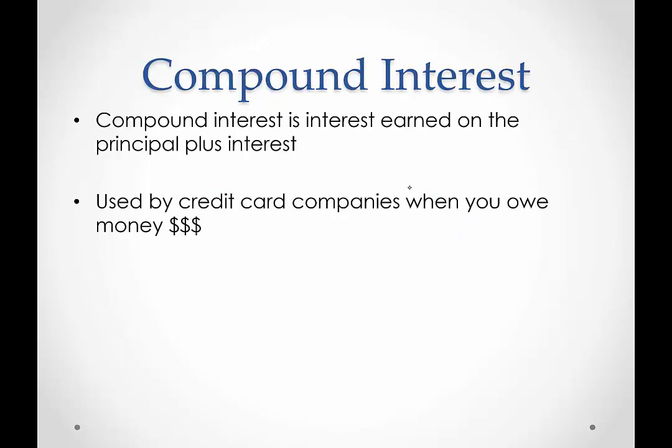First, let's start with the definition of compound interest. Compound interest is interest earned on the principal plus interest. So if you invest $100 into a savings account and by the end of the first year you have $102, you would earn interest on the $102, not just the $100. If you're only earning interest on the principal, that's considered simple interest.